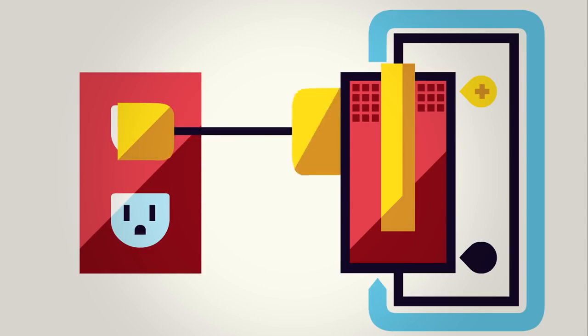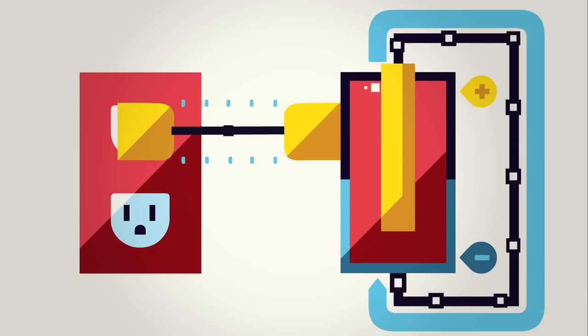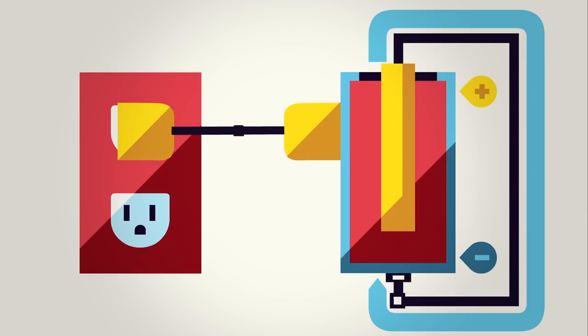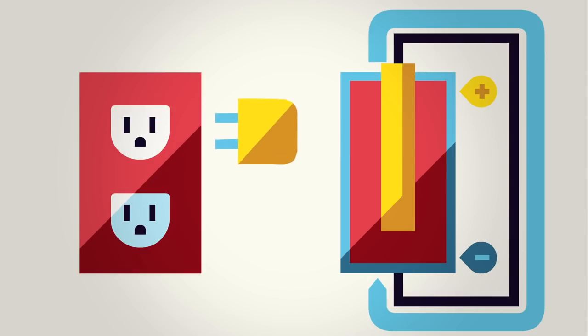Plugging in a charger draws the electricity from a wall outlet that drives the reaction to regenerate the metal, making more electrons available for oxidation the next time you need them.